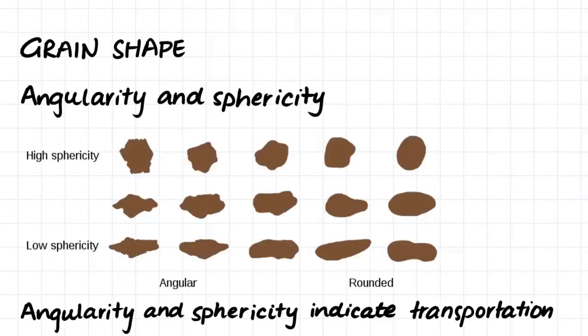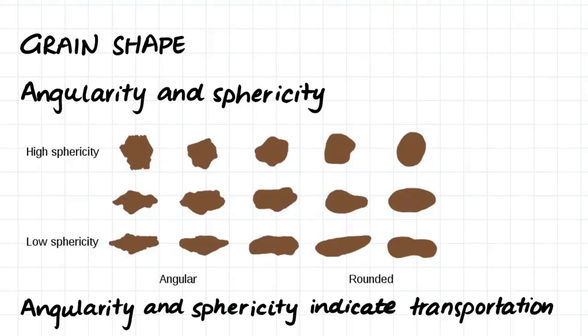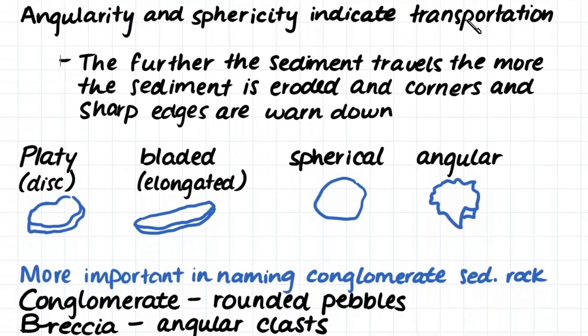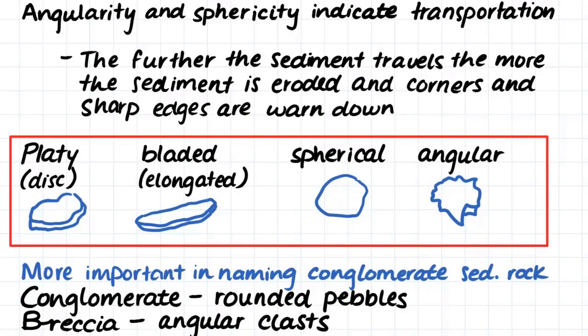The next thing we look at when classifying sedimentary rock is grain shape. Here we look at how angular the grains are and how spherical they are. Grains that are spherical are said to have high sphericity, whereas grains that are quite oblong in shape are said to have low sphericity. Angular grains are, as it sounds, angular, and then we have rounded grains that don't have any sharp edges. Angularity and sphericity actually indicate how far a grain has been transported. The further the sediment travels, the more the sediment is eroded and the corners and sharp edges are worn down. Therefore, more spherical grains have been transported longer distances from their source of weathering. There are four main types of grains: platy, bladed, spherical, and angular.